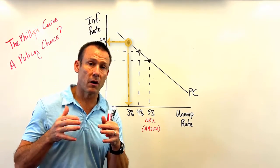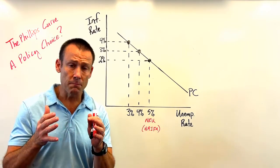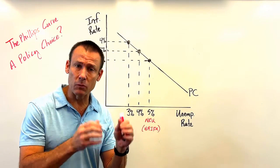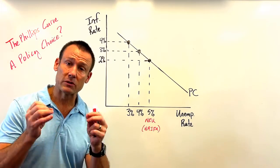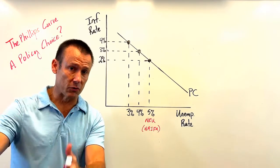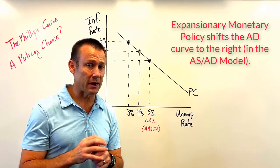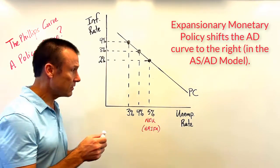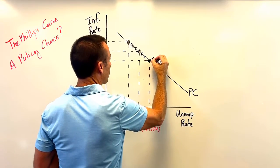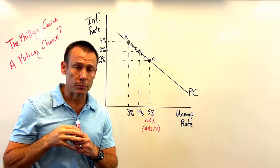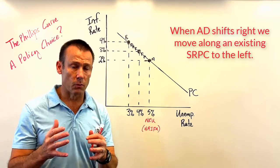To achieve this, policy authorities use expansionary policies. For monetary policy, the Fed would lower the IORB, which lowers the federal funds rate — the policy rate — in an ample reserve framework. Other interest rates in the economy follow suit, and as interest rates drop we get more spending. In an AS-AD model, the AD curve shifts right. As that AD curve shifts right, we move along the Phillips Curve from point A to point B.